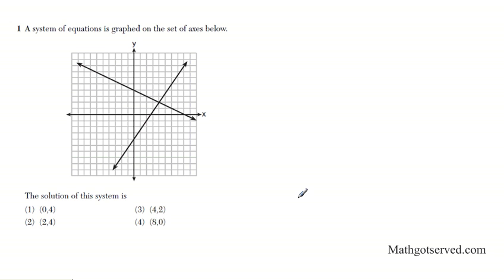Number one: The system of equations is graphed on the set of axes below. The solution of the system is... You have to be really careful here when you're reading the coordinates. Some people might switch the coordinates around. The solution to this system is the point of intersection of the two lines. These two lines represent two equations and where they intersect is where they are exactly equal. So what are the x and y coordinates? Your x-coordinate is 4, and your y-coordinate is 2. So if you want to write this as a point, you're going to write it as 4, 2.